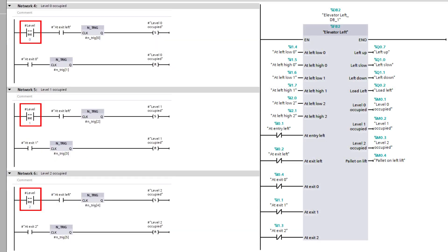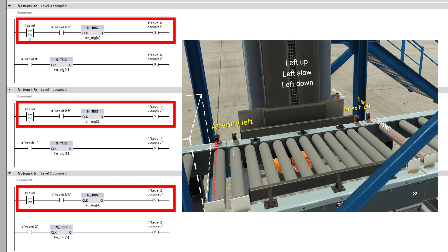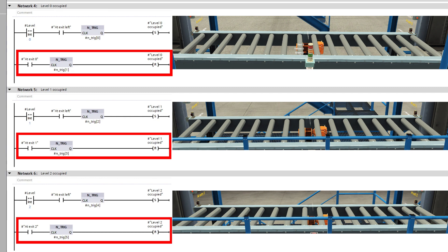In the next three rungs, I use this level tag to tell which level is occupied and which is not. When the pallet has passed by the elevator's exit-left sensor, it will set the occupied tag depending on which level it is at. The level will remain occupied until the pallet has passed by the at-exit sensors on the other side of the levels.